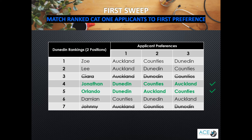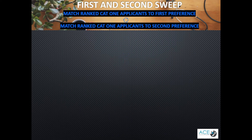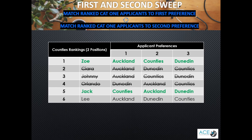Dunedin has now filled all of their positions, so the algorithm moves on to the next DHB. Now we have Counties' ranking. The algorithm will start with Zoe again. However, as she has not ranked Counties first, she is not matched, but is flagged for the second sweep. The next three applicants are skipped, as in reality they do not show on the DHB's list, as they have already been matched. Jack has ranked Counties first, so he is matched. But Lee has not ranked Counties first, so he is not matched.